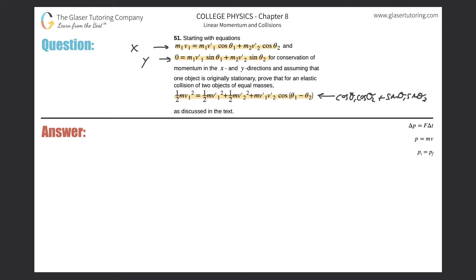I'm going to change notation — instead of using prime for 'after,' I'll use 'a.' So the first equation becomes: m·v1b = m·v1a·cos(theta1) + m·v2a·cos(theta2). Since the masses are equal, instead of writing m1 or m2 we just write m. I'll erase the subscript ones from the masses but leave all the other subscripts alone.